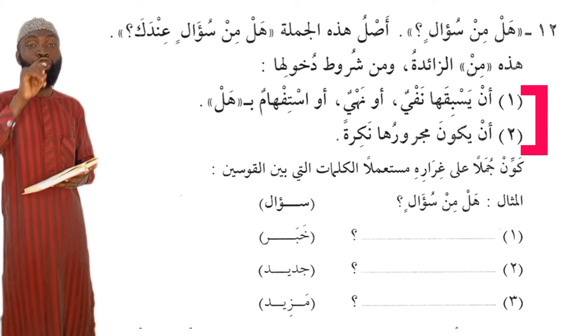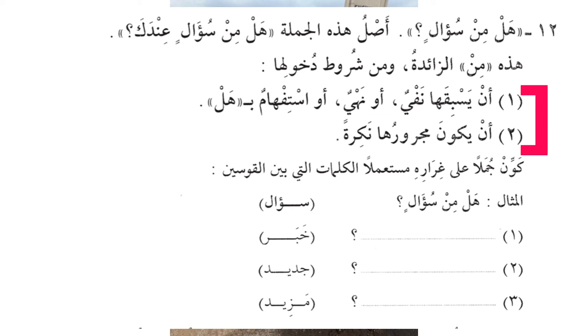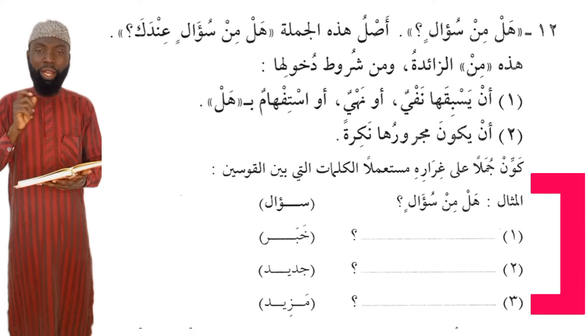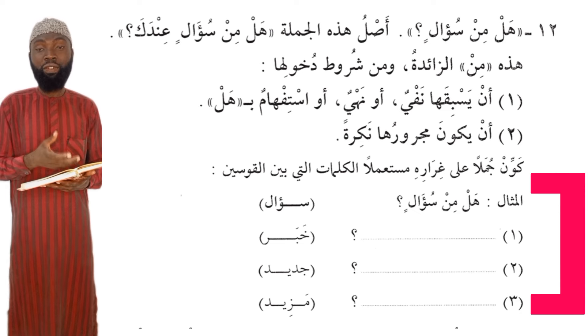The second condition is that the genitive noun — the noun appearing after 'min', which is supposed to be in the genitive case carrying kasra — should be an indefinite noun, not carrying the definite article 'al' (alif lam). Now we have a short exercise from here, and when you solve this you will know how to use these short phrases.